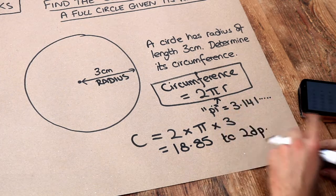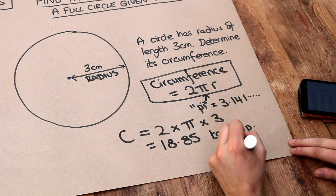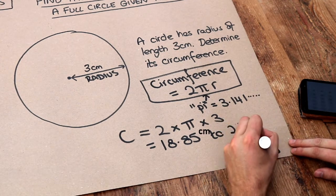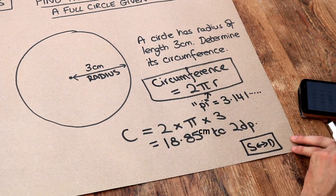And note that your calculator might say 6 pi. And if that happens, just press the SD key on your calculator and that will convert it from 6 pi into decimal form like this.